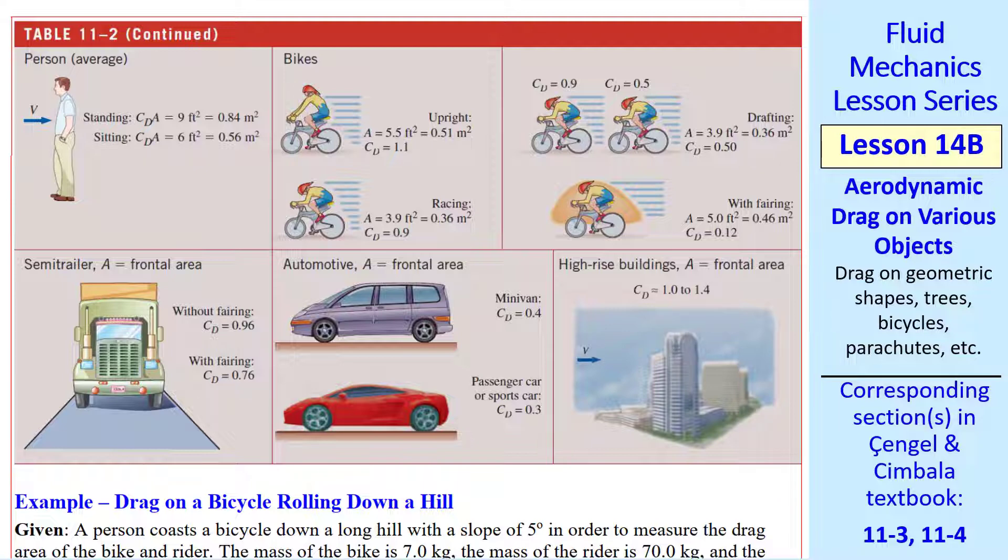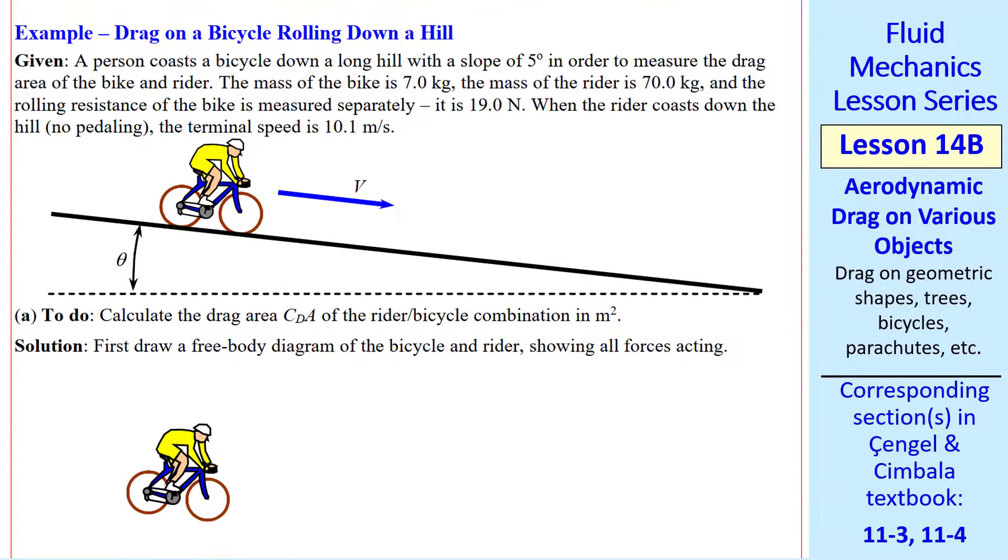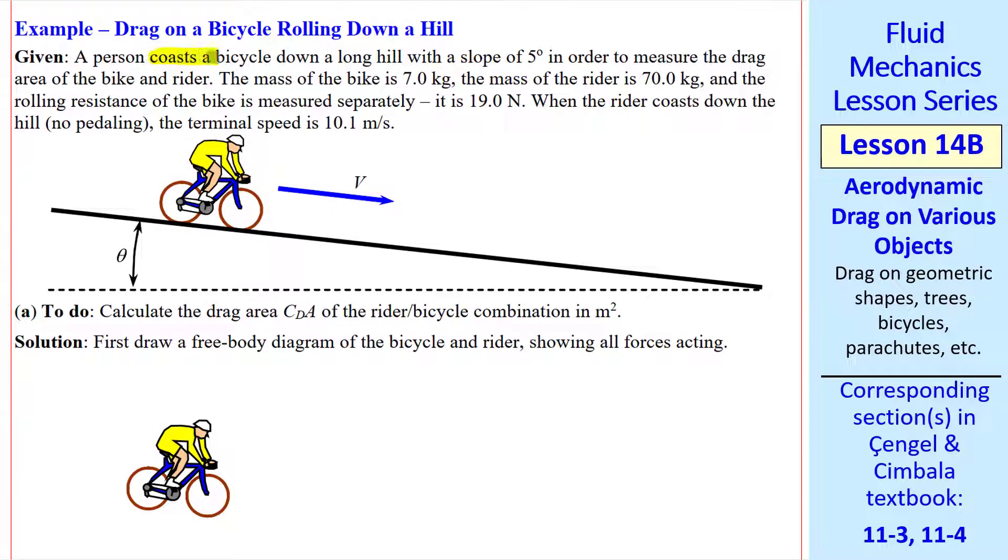Now let's do an example problem. It turns out that coasting a bicycle down a long hill enables us to measure the drag area of the bike and rider combination. In this problem, we give the mass of the bike and the rider, and the rolling resistance of the tires.